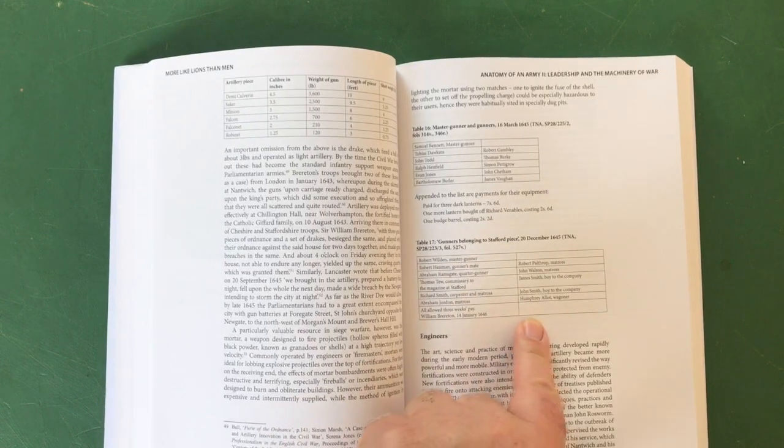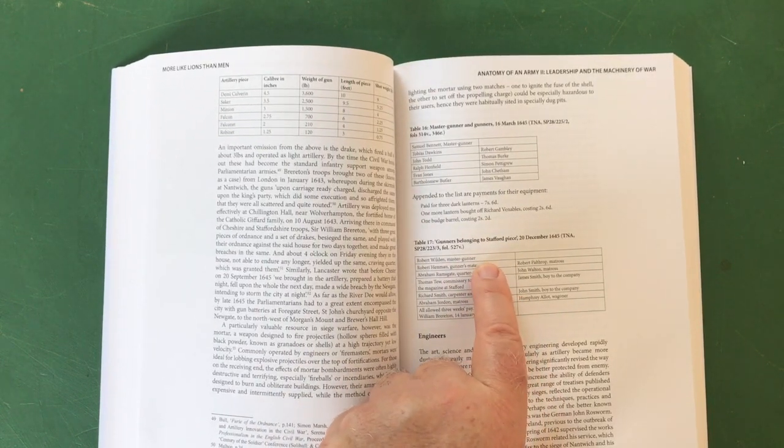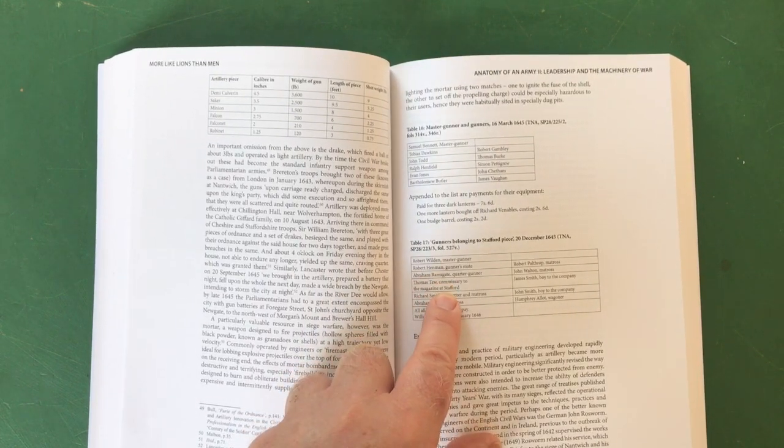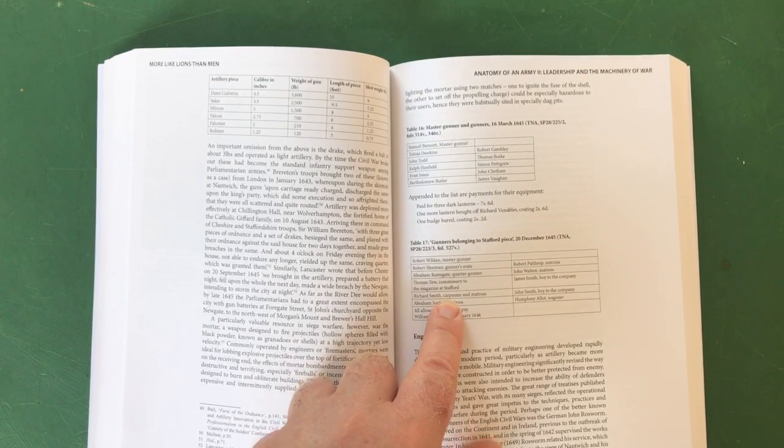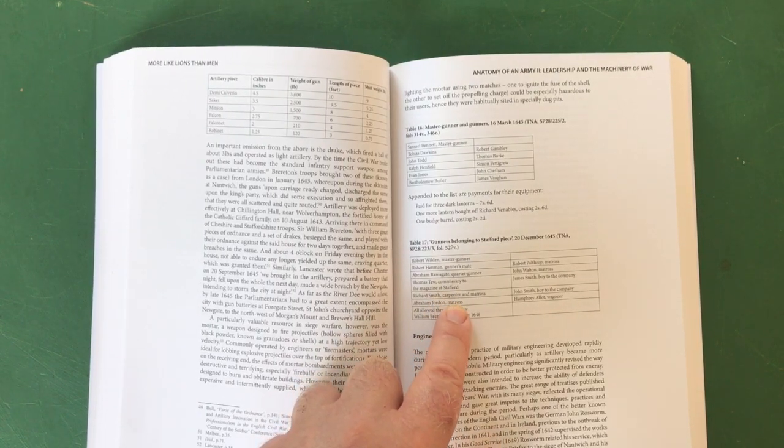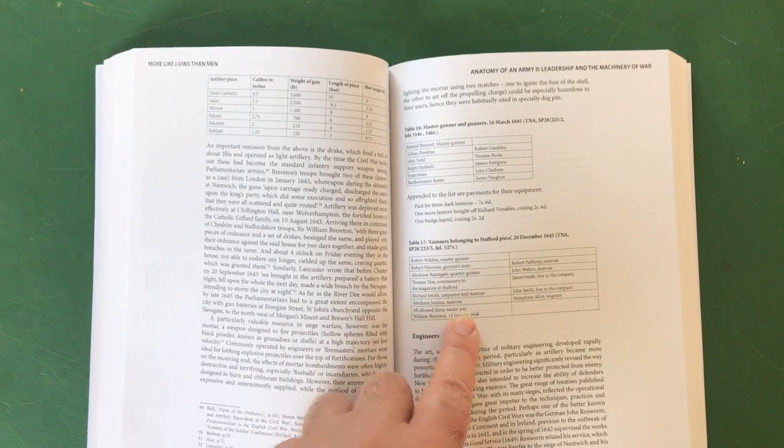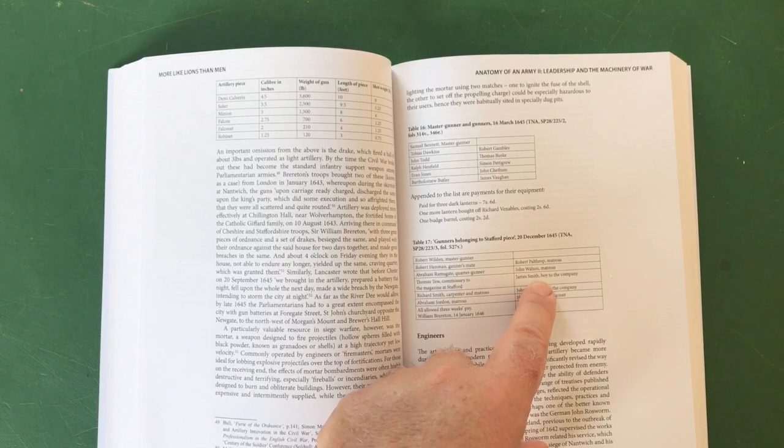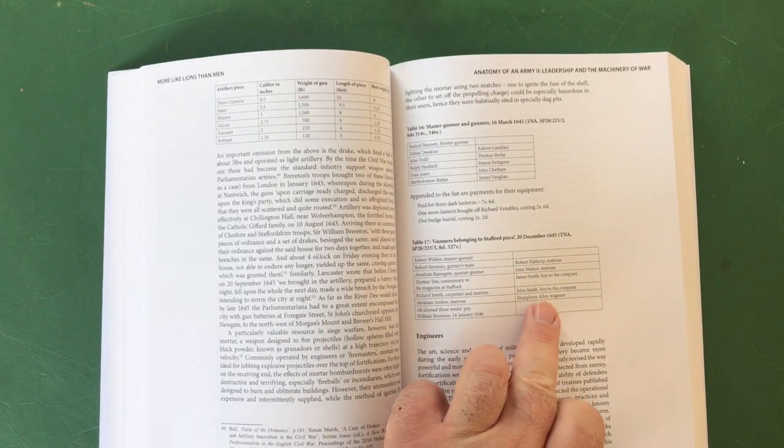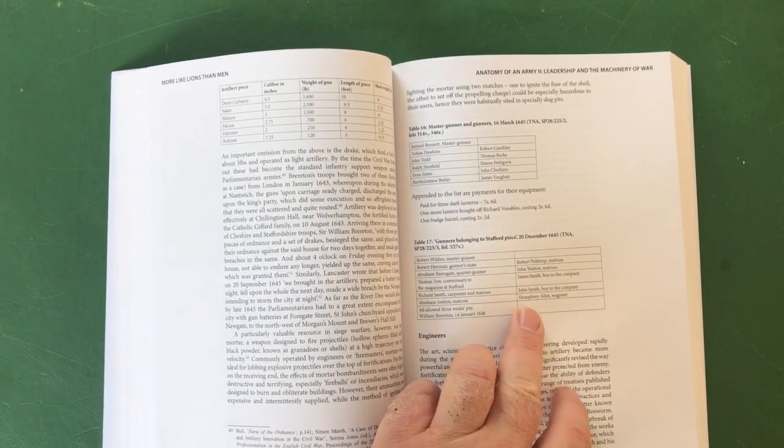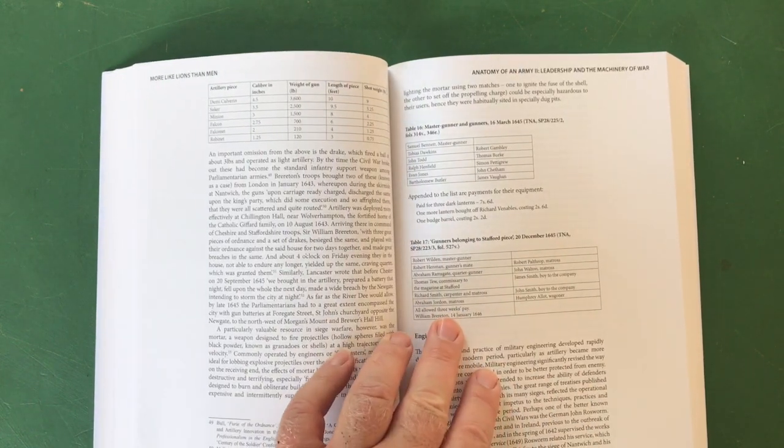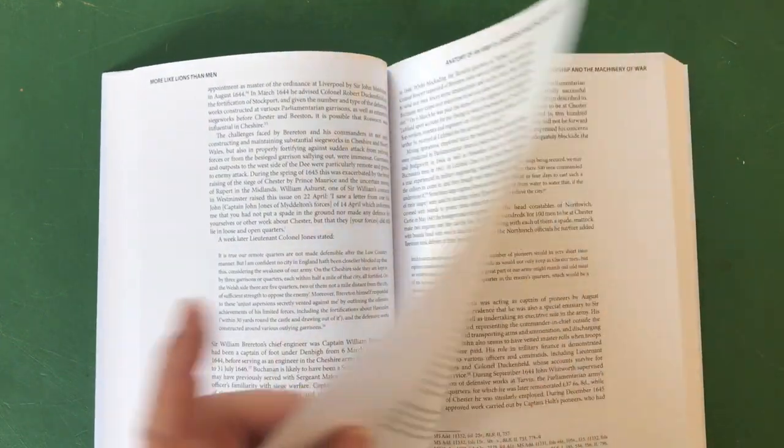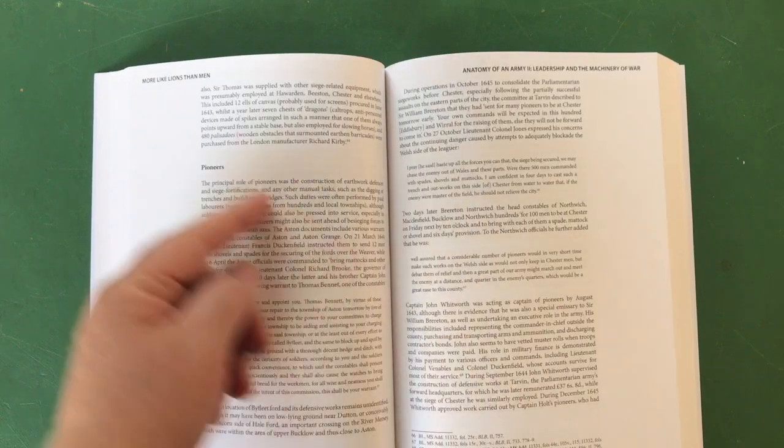But here we are: the names of the various master gunners and gunners present. Gunners belonging to the Stafford Piece - all named. Look at this: Robert Wilden, master gunner; Robert Henman, gunner's mate; Abraham Ramsgate, quarter gunner; Thomas Too, commissary to the magazine at Stafford; Richard Smith, carpenter and matross; Abraham Jordan, matross; Robert Palthrop, matross; John Walton, matross; James Smith, boy to the company; John Smith, boy to the company; Humphrey Allert, waggoner - and all allowed three weeks' pay. Isn't that fantastic, that kind of detail? Little nuggets like that. Pioneers.